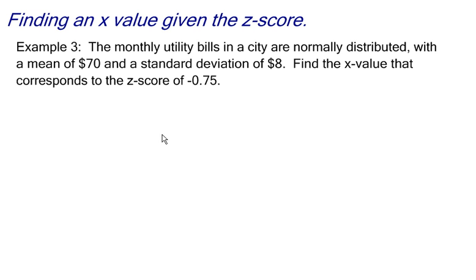Sometimes when you're dealing with a normal model, you have to work backwards. Instead of getting a value, changing it into a z-score, and finding the area under the curve that corresponds to that z-score, you're given a z-score and have to change it into an x-value. This is just an algebra problem.